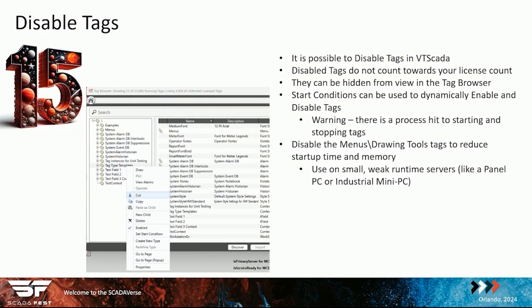In VTScada, you can disable tags. You can simply just right click on a tag and click disable. It essentially turns that tag off — gets rid of it, it's gone. It no longer counts towards your license count, it's no longer in your system. It is still in your system because you can re-enable it again, so you've not lost the configuration of that tag. You still hold the configuration there, but you've essentially created a ghost or a small hidden version of those tags.